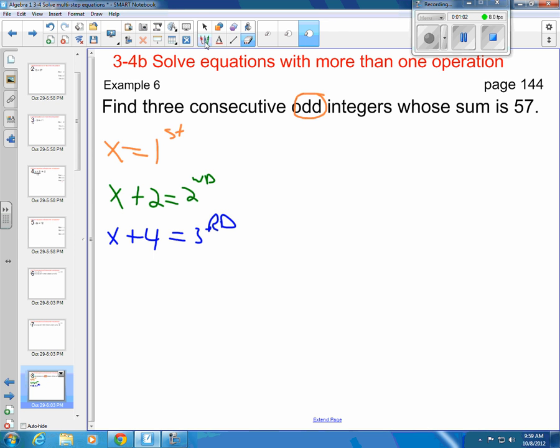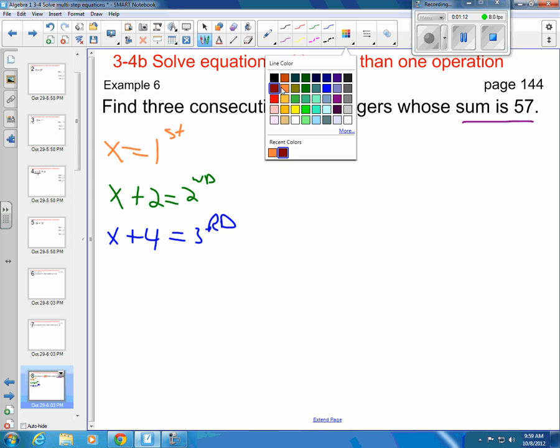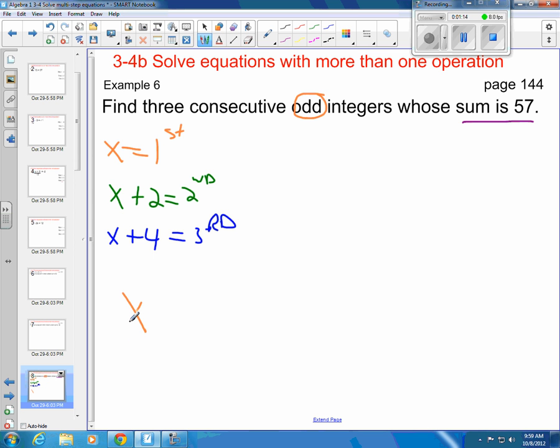So now we're back to finding the sum that is 57. So I'm going to take my first one, which was x, and I'm going to add it to my second one, which is x plus 2. And then I'm going to add it to my third one, which was x plus 4. And we said that is 57, which means I'm just going to add them all up and get 57.